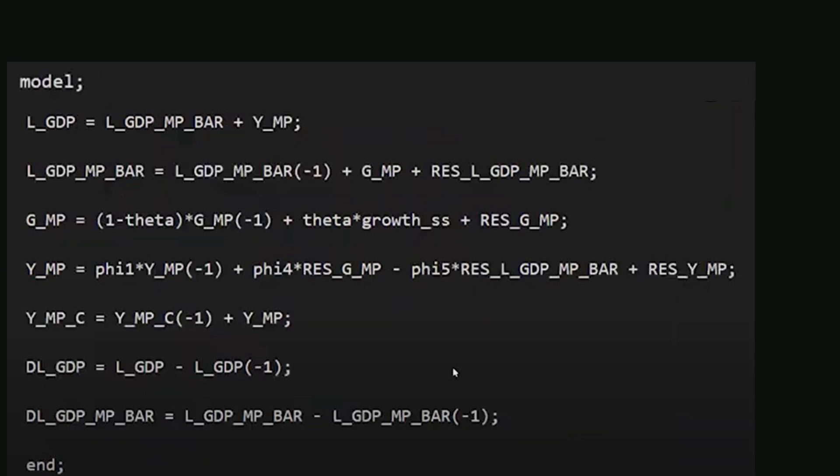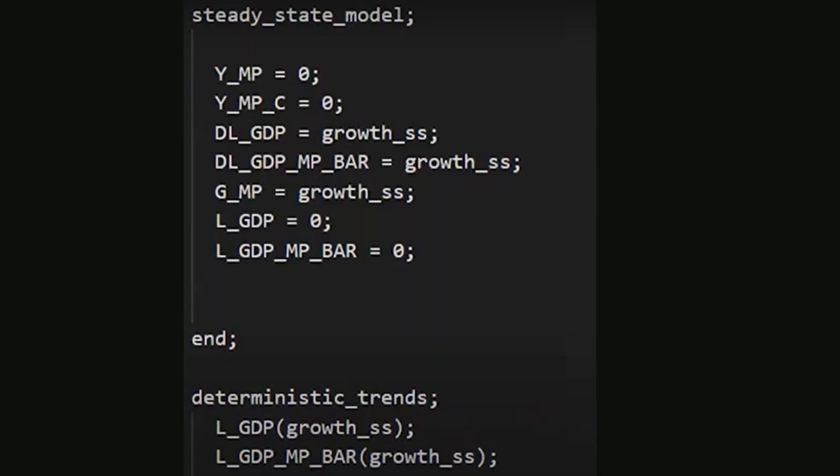The steady-state model block introduced with steady_state_model and ending with end defines steady-state values. All gap variables such as the output gap and cumulative output gap are zero in the steady-state. Growth rates for GDP, trend output, and the persistent component equal their steady-state growth rates.